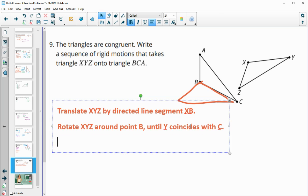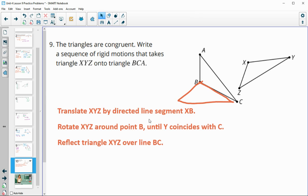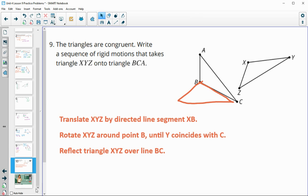So then we just need to reflect triangle XYZ by the side that we just got together. So reflect triangle XYZ over line BC and it would land, everything would land right on top of each other.